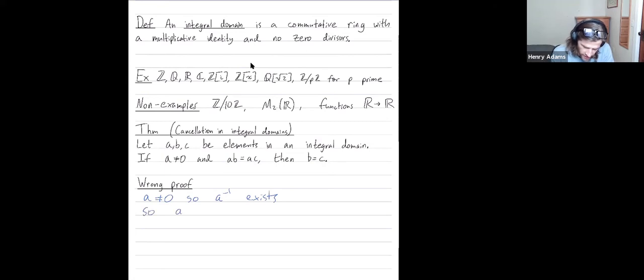So then ab equals ac implies, let's just multiply by a inverse on both sides, a inverse ab equals a inverse ac, and then the a inverse and the a cancels to give me b equals c. That works in fields, but we can't do that in integral domains. The reason being a inverse need not exist.